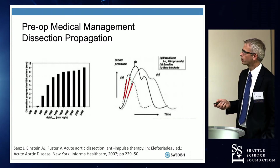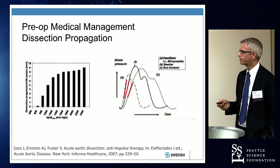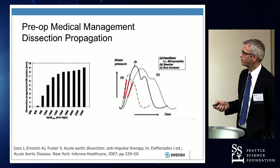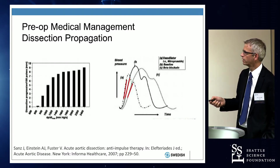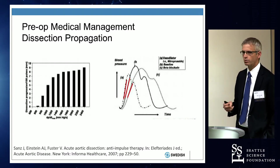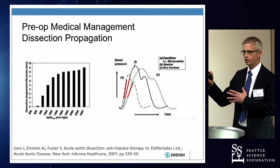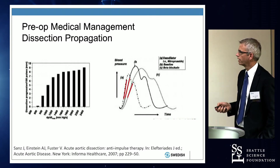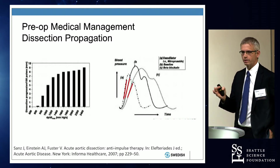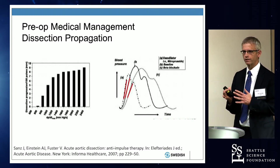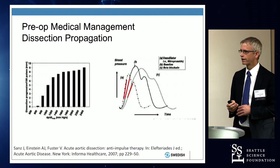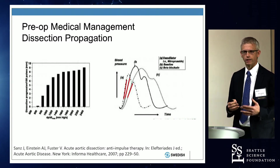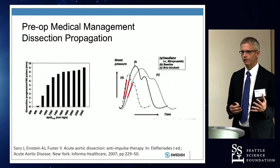Looking at this graph, curve B shows normal contractility and normal pressure generation with contraction. If we treat with beta blockade — the preferred treatment — we decrease the slope of this angle, meaning less contractility and a gentler ejection of blood into the dissected aorta, less shear stress, and less chance of propagation and dying.